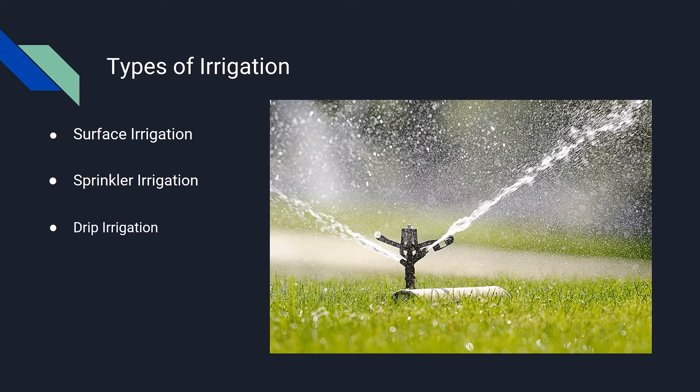Drip Irrigation: In this type, drops of water are delivered near the roots of the plants. This type of irrigation is rarely used as it requires more maintenance. Center Pivot Irrigation: In this, the water is distributed by a sprinkler system moving in a circular pattern.